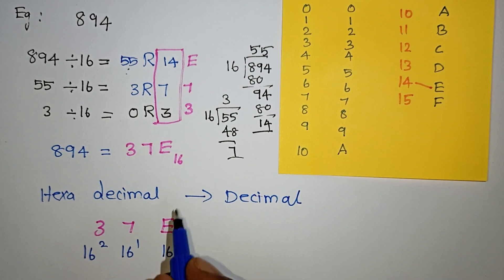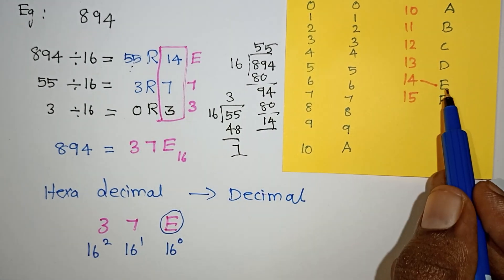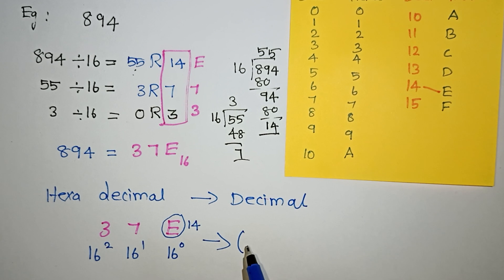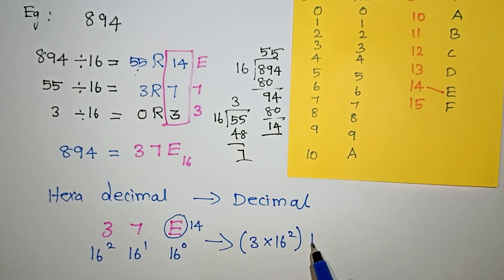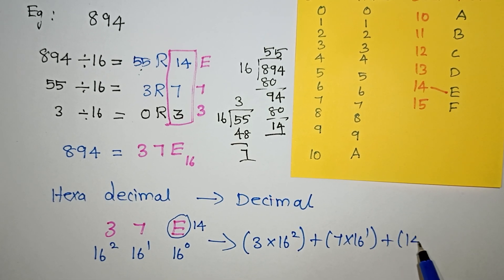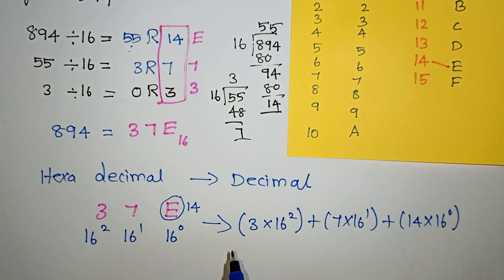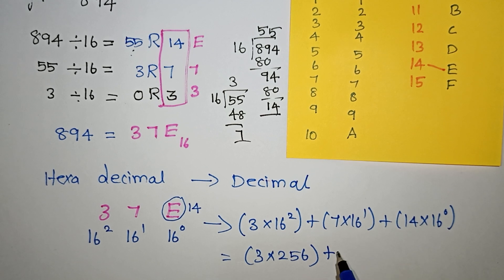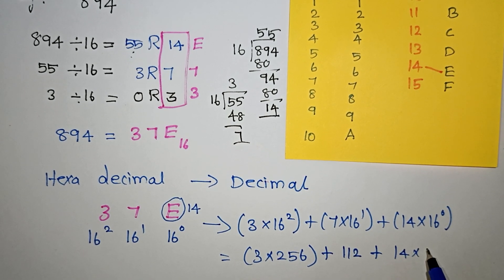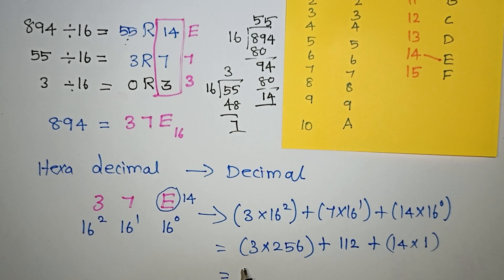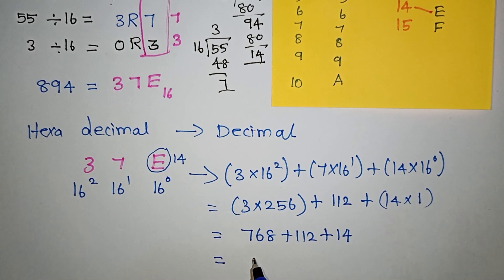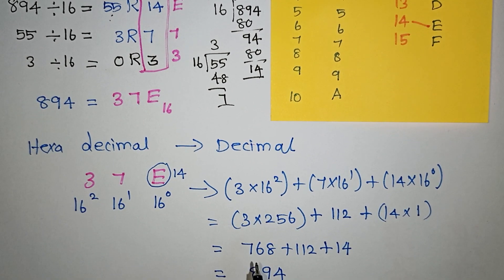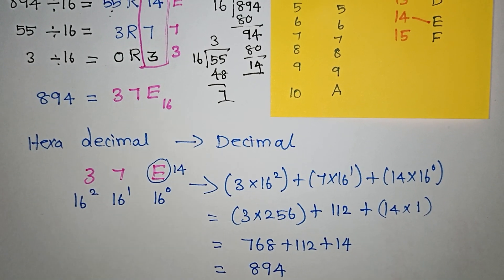If you multiply using the positional values, you get the correct answer. This value is 14 for the last digit. The calculation is: 3 into 16 square, plus 7 into 16 power 1, plus 14 into 16 power 0. Anything to the power 0 is 1. So 3 into 256 is 768, plus 7 into 16 is 112, plus 14 equals 894. The decimal number is equal to 894. This is the basic hexadecimal-to-decimal conversion.